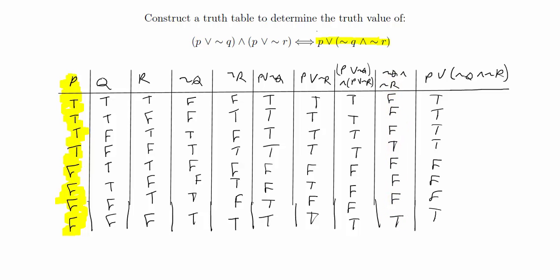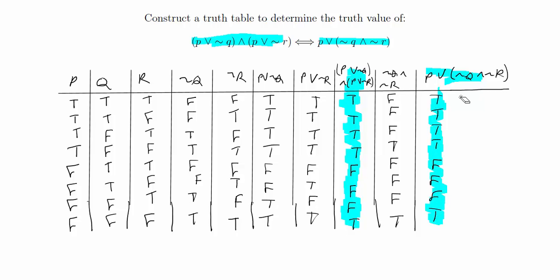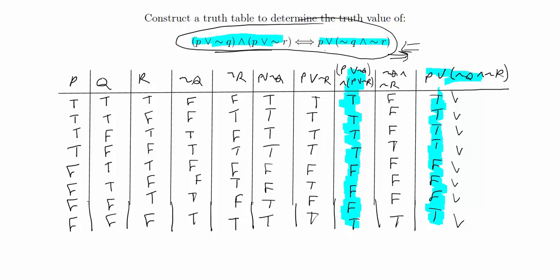Now we're ready to see if the two sides are logically equivalent. We compare the column for P∨¬Q∧(P∨¬R) — the left-hand side — with the column for P∨(¬Q∧¬R) — the right-hand side. If they're the same for all rows, the statements are logically equivalent; if they differ at any row, they're not. Comparing them: true, true, true, true, false, false, false, true on both sides. They match completely, so the two statements are logically equivalent, and this statement is true.